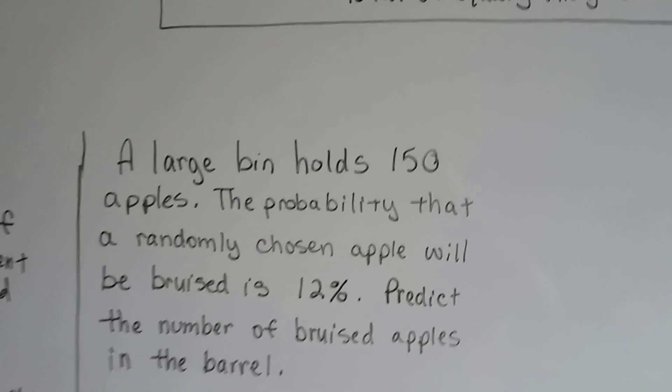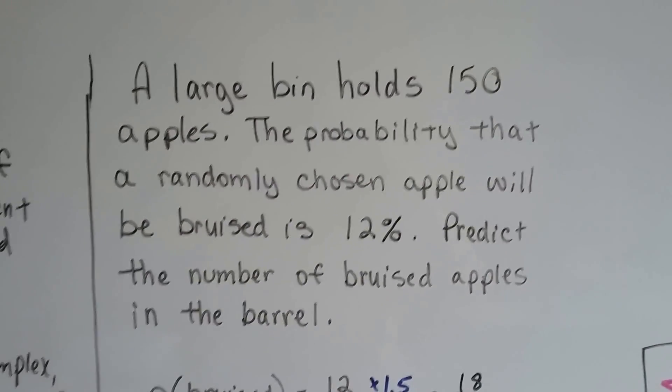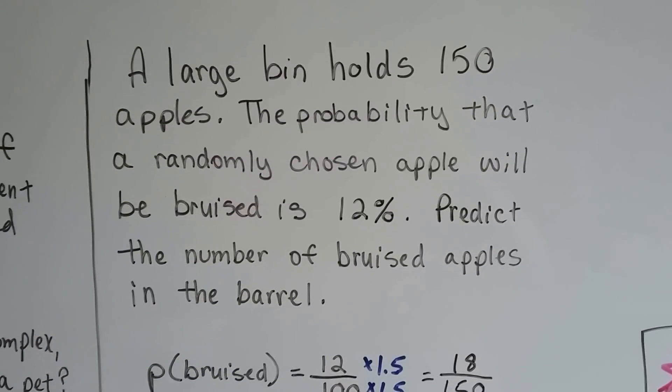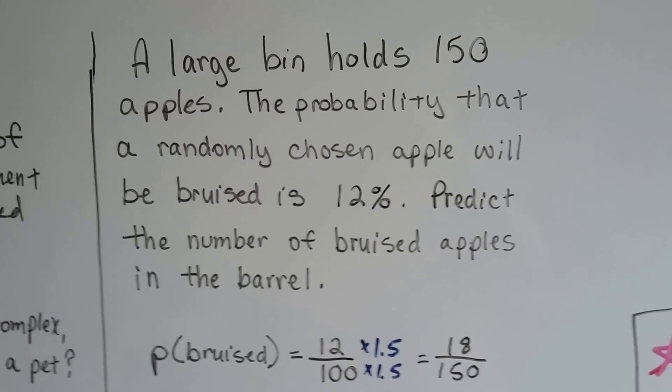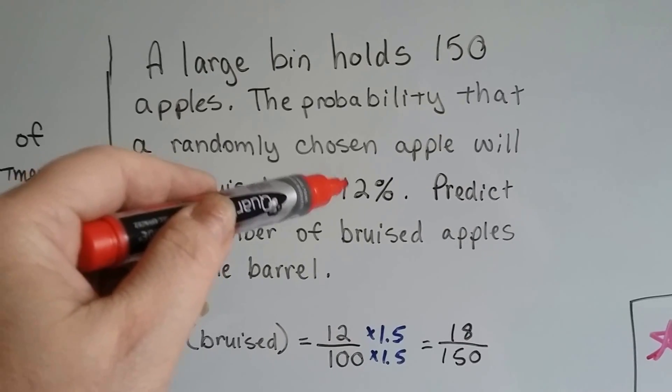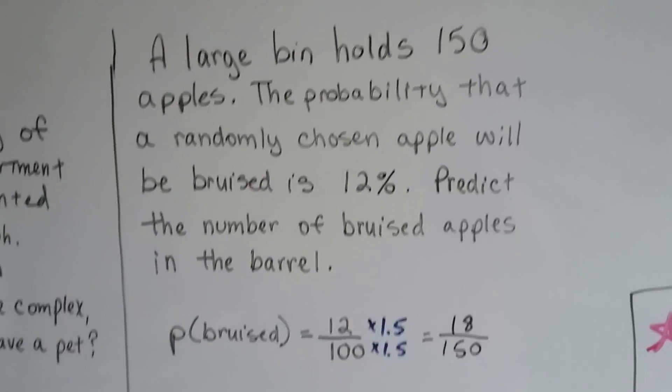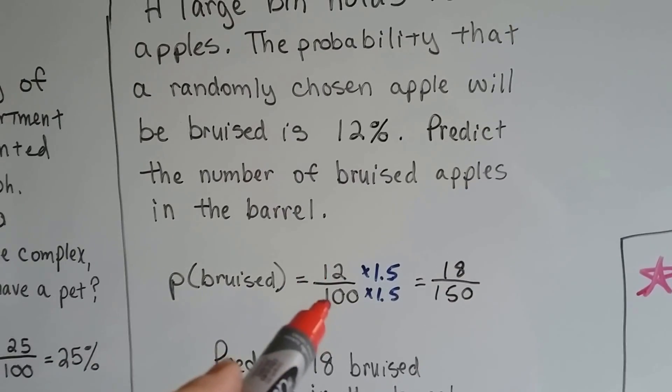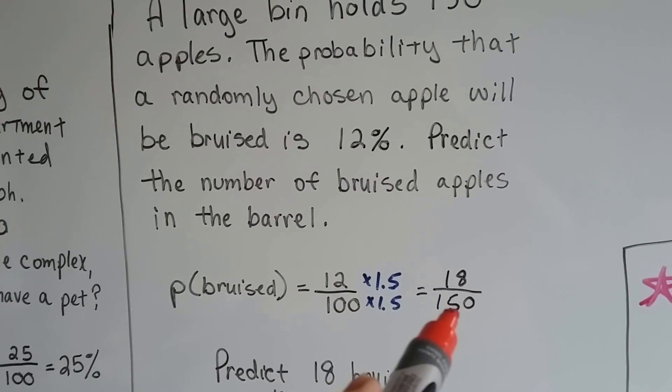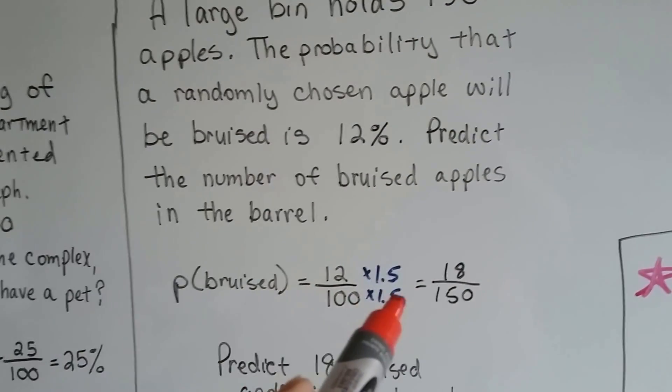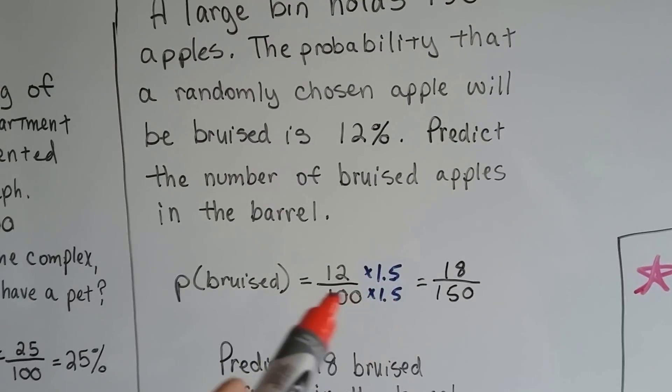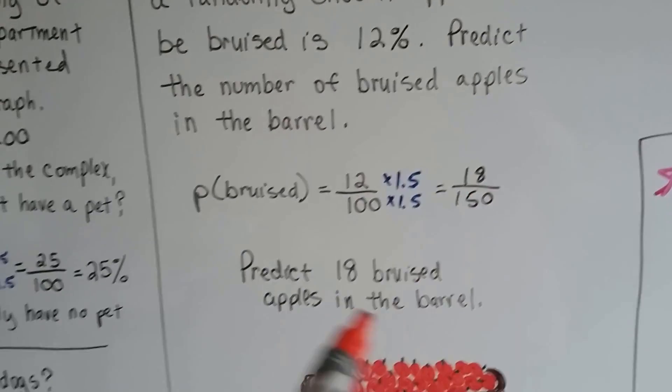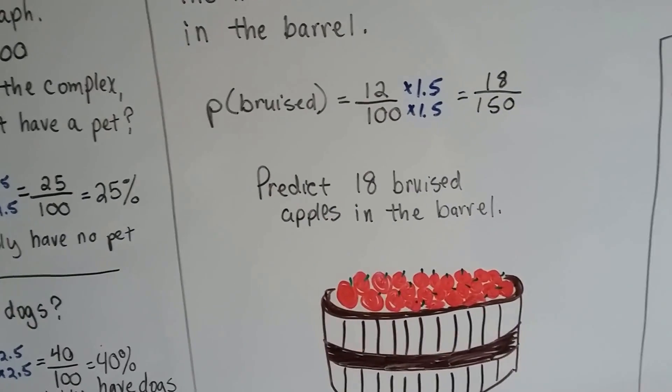A large bin holds 150 apples. The probability that a randomly chosen apple will be bruised is 12%. Predict the number of bruised apples in the barrel. Remember 12% means parts of 100, so that means 12 out of 100, but it's holding 150. The probability that an apple is bruised is 12 out of 100. Let's get the denominator to 150. We'll multiply them both by 1.5, and that'll get the 100 to 150, and the 12 to 18. So we can predict 18 bruised apples are in this barrel.